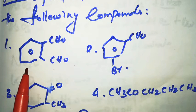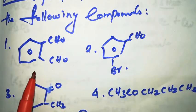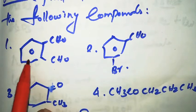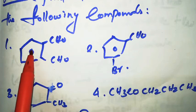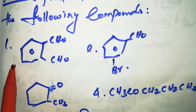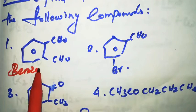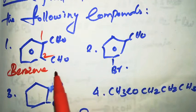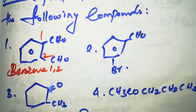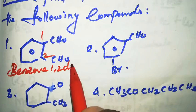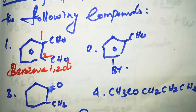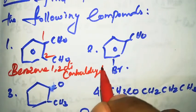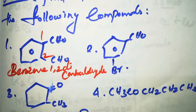The first compound has a single cyclic structure — a benzene ring — with two aldehyde groups. Numbering positions one and two, the IUPAC name is benzene-1,2-dicarbaldehyde.